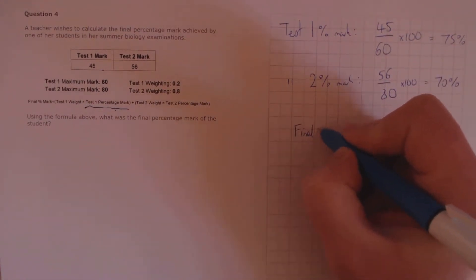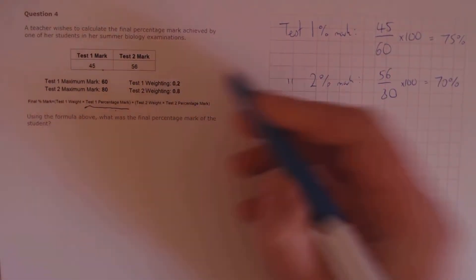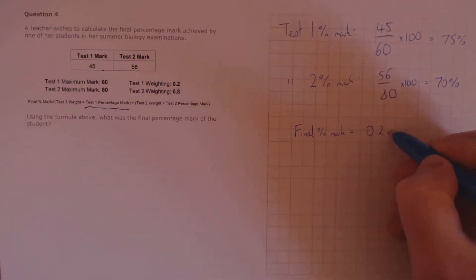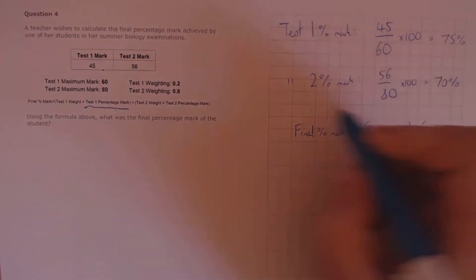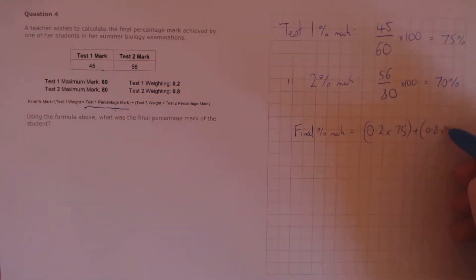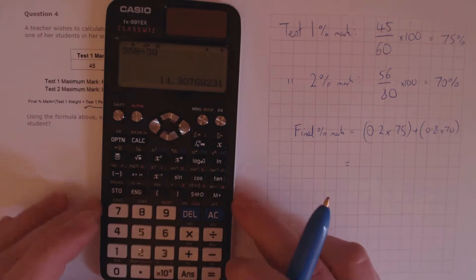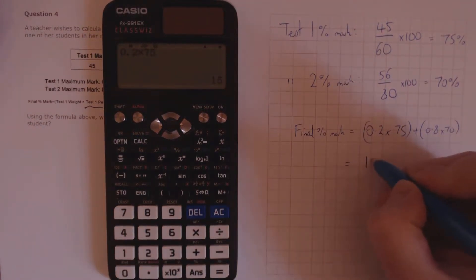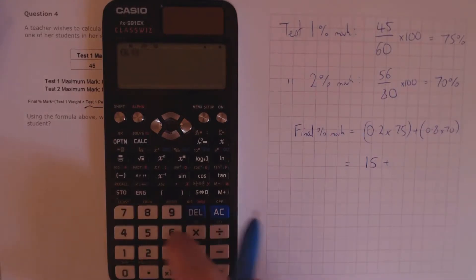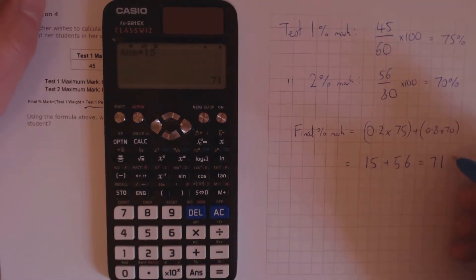Now we can substitute these into the formula. The final mark as a percentage is test 1 weight, which is 0.2, multiplied by the percentage mark 75, plus 0.8, the test 2 weighting, times 70. So, 0.2 times 75 is 15, plus 0.8 times 70 is 56, giving us a final mark of 71%.